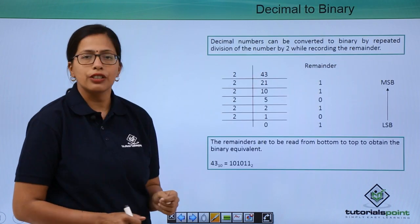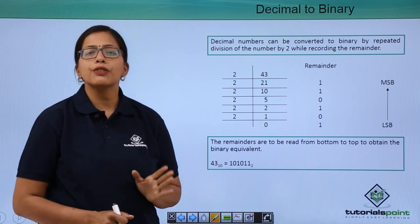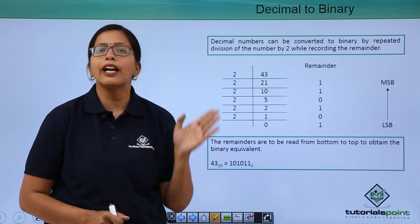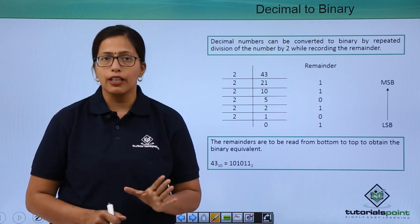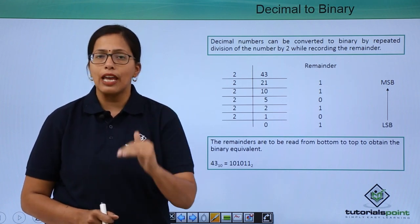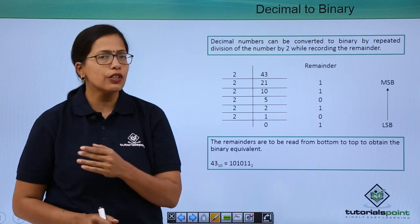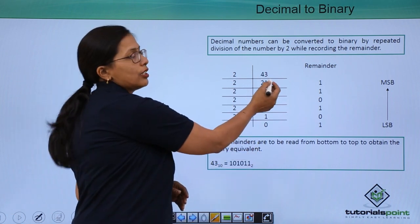We have a number here, 43. What we have to do is, we have to repeatedly divide it by 2 till I get 0 as the quotient. And at each step, I will record the remainder. Let's do it here.